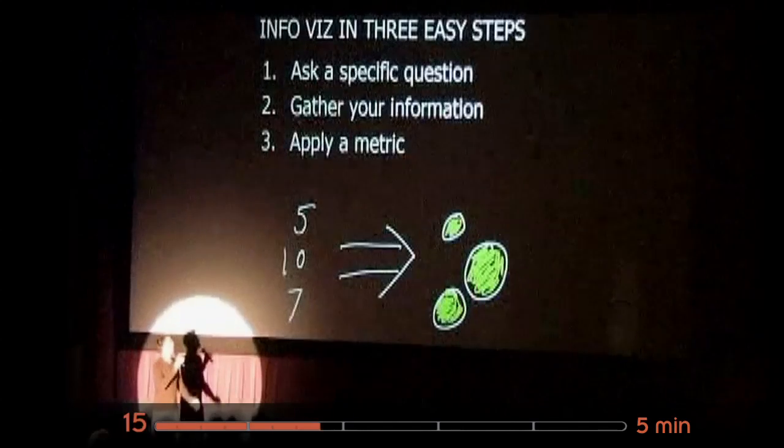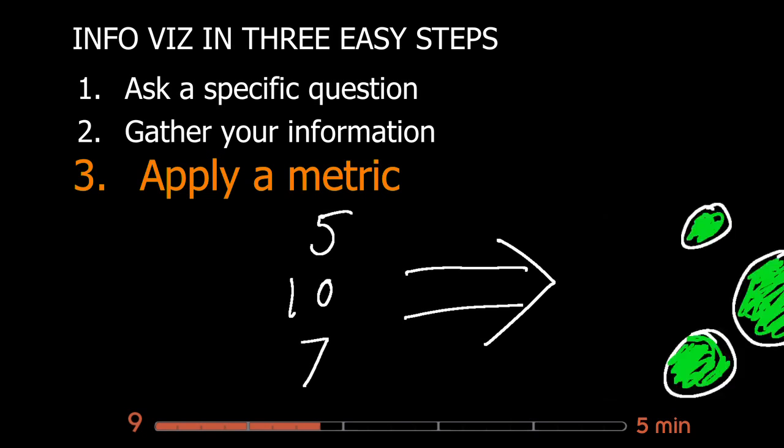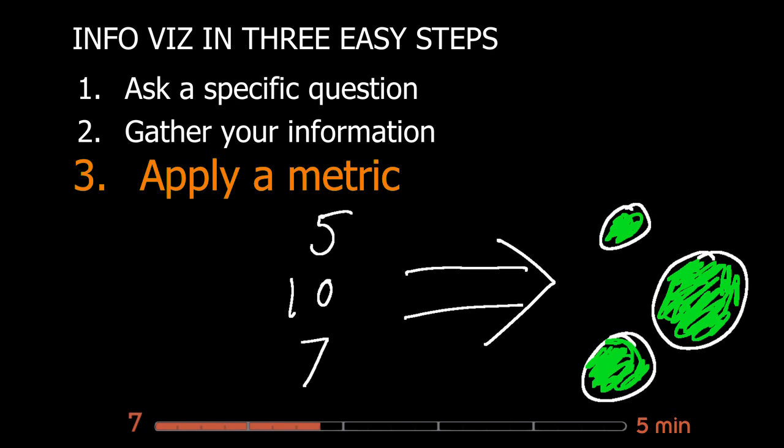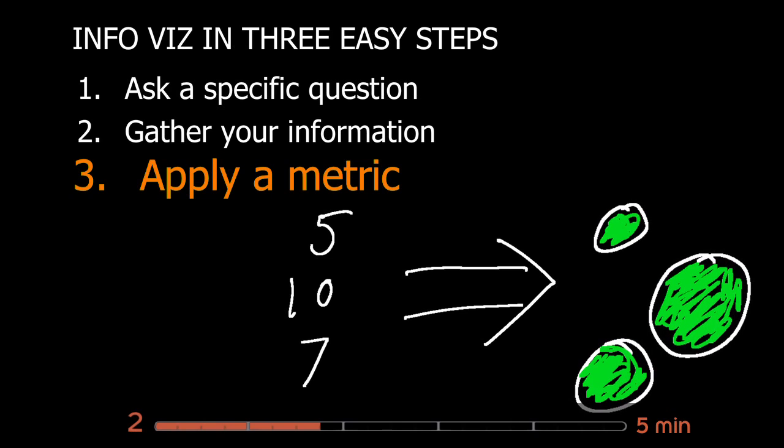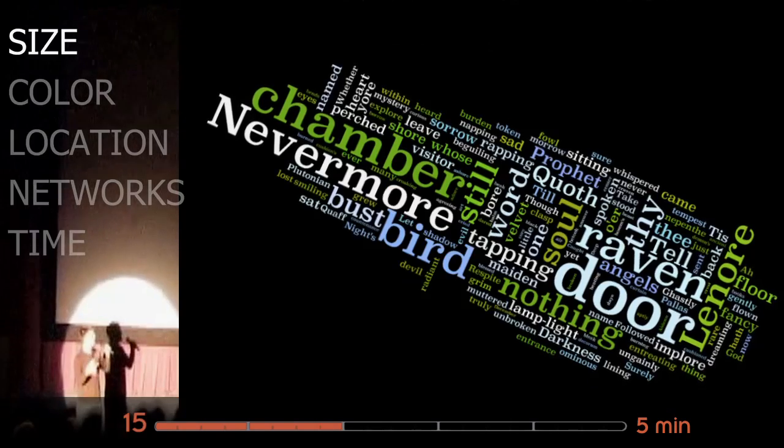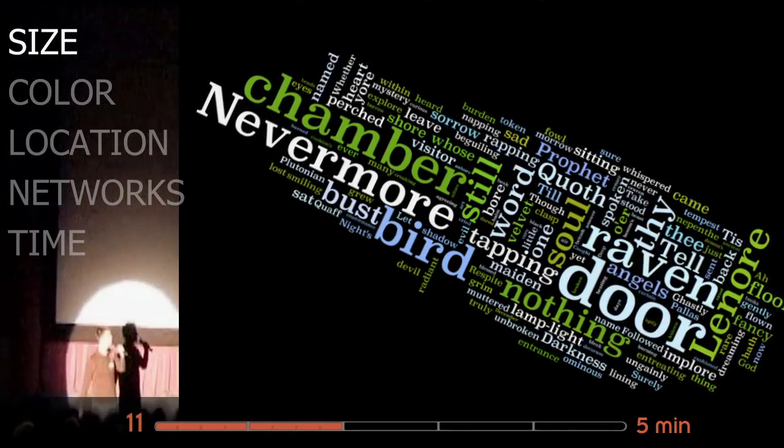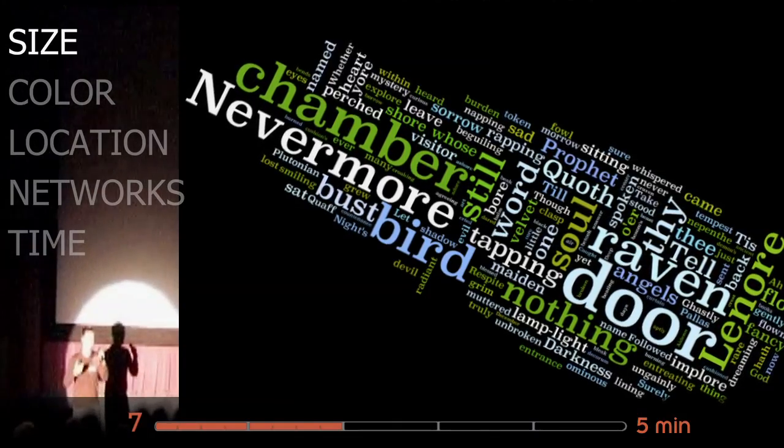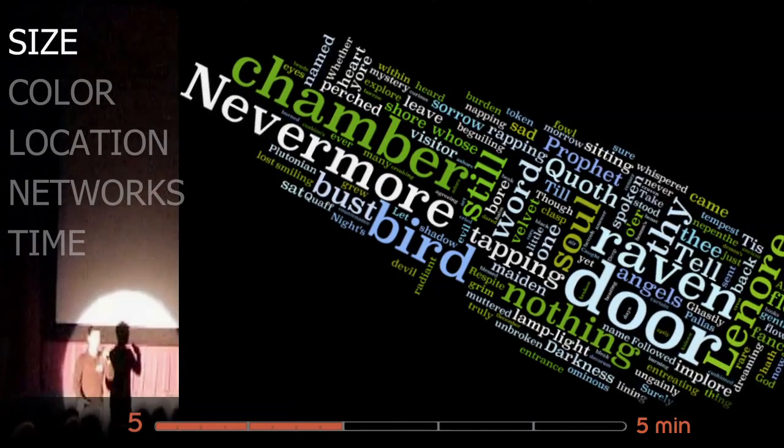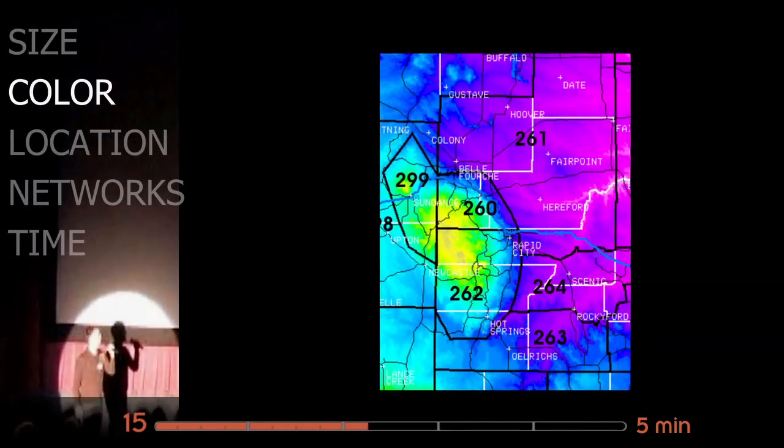Once we have our information, then we apply a metric. A metric is basically taking one piece of data and applying it to some sort of visual dimension. This is a basic size metric where we have bigger numbers represented by larger circles. In the next slide, we have Edgar Allen Poe's The Raven, visualized using a program called Wordle, where the common words show up more frequently. Size is really intuitive for people to understand, but be careful. If you've ever put information in a bar graph and no one understood it, you're using the size metric because you thought it meant everything.